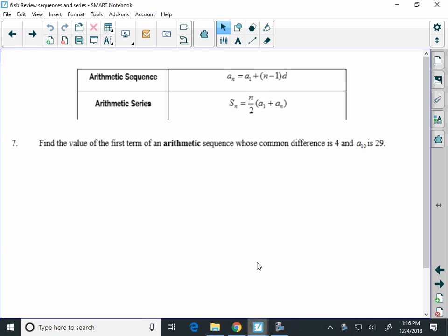Find the value of the first term of an arithmetic sequence whose common difference is 4 and a sub 10 is 29. So I know there's a lot of stuff written down in this problem already, but what if we start this way?